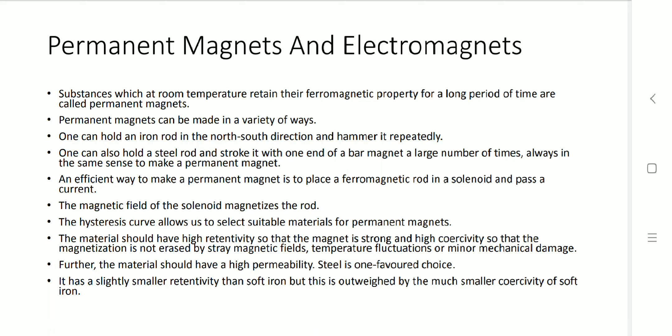Instead of soft iron, steel material is also used. A steel rod is held and stroked with one end of a bar magnet. If we take the north pole of the bar magnet and continuously stroke from that side only for a number of times, the steel rod becomes a permanent magnet.